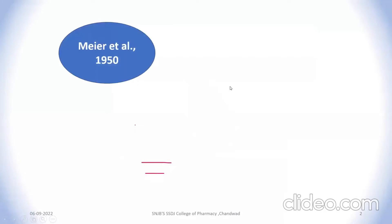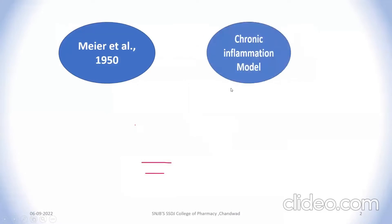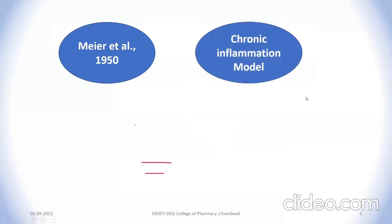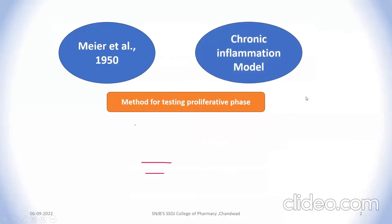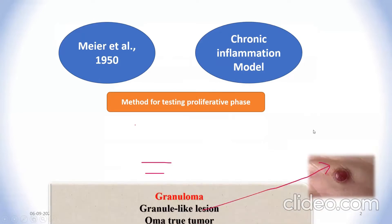This method was first described by Muir et al. in 1950 and is used for chronic inflammation study. This method also tests the proliferative phase or the granuloma formation.